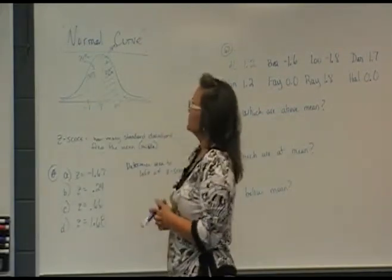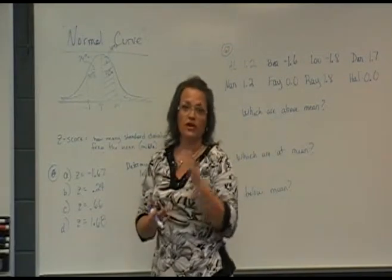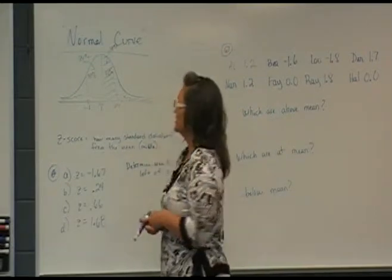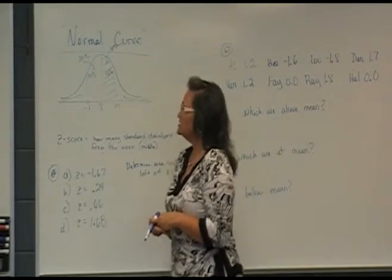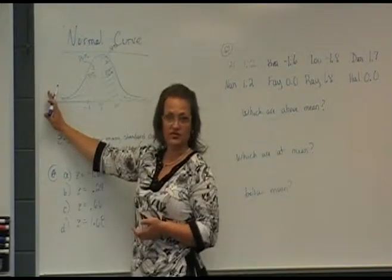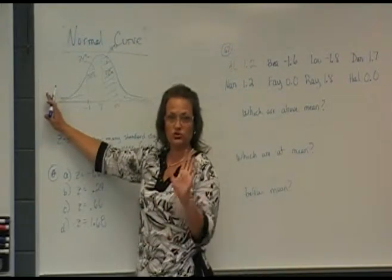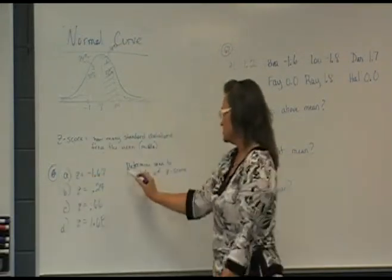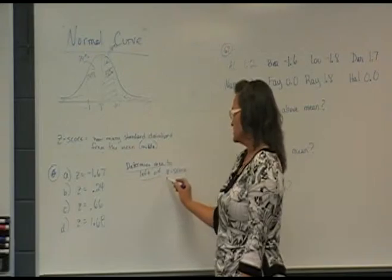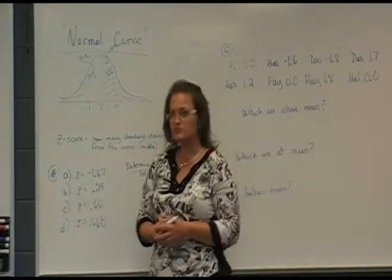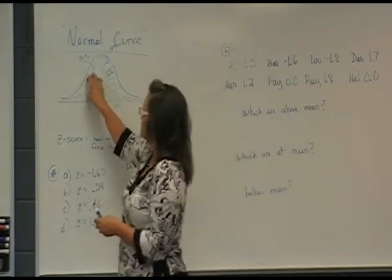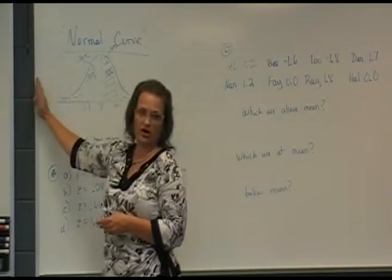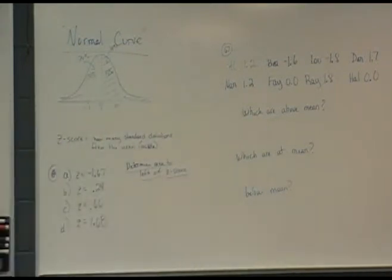For our purposes, using the chart, we'll just talk about z-scores to the left of z. All your charts are labeled with 'area to the left of z.' For example, number 66 says: determine the area to the left of a z-score given A, B, C, D. So instead of doing the negative one and positive one parts separately, it just says here's the z-score, and it gives you the area all the way over to the end.